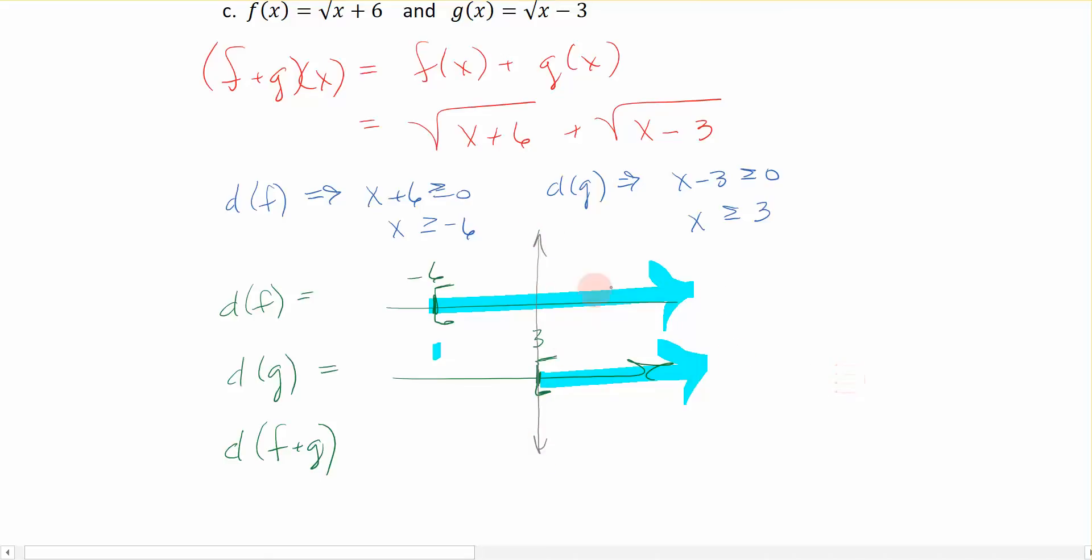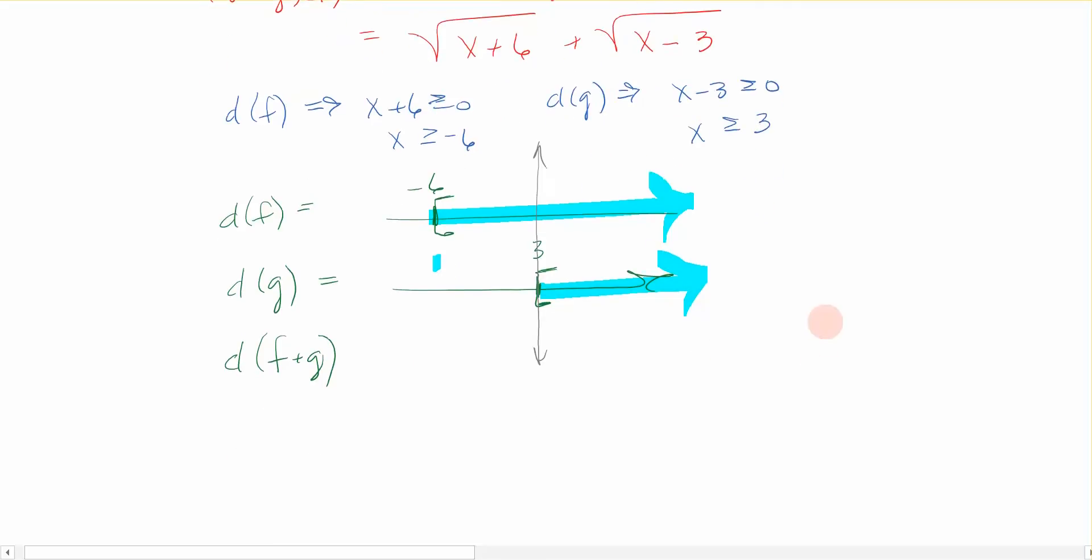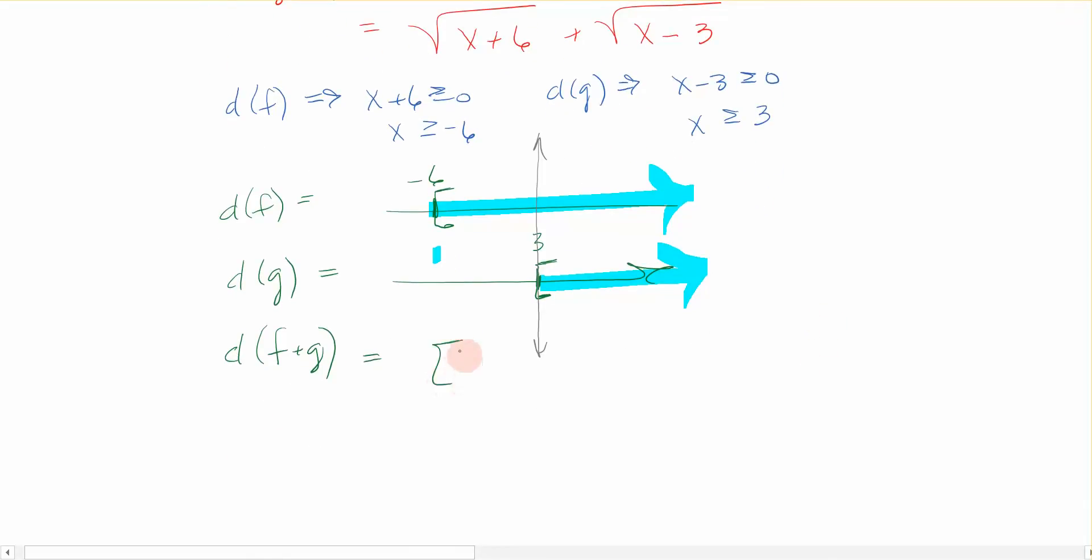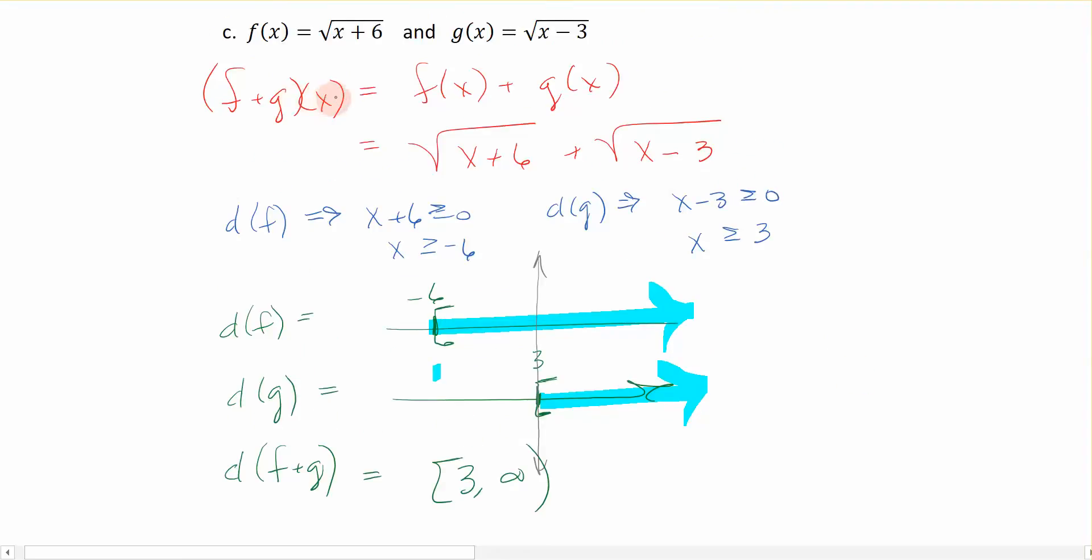So that's where they, not intersect, it is called intersection, but I would probably look at it more as where do they overlap, at what point are they starting to overlap. And they are overlapping, you can see here, from 3 to infinity. Okay, so that's how we would find the sum of these two functions which are radicals.